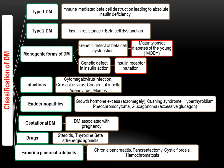Infections can also cause diabetes. These include cytomegalovirus infection, coxsackievirus infection, congenital rubella, adenovirus, and mumps virus. These infections cause beta cell dysfunction, for example cytomegalovirus infection leading to beta cell destruction.